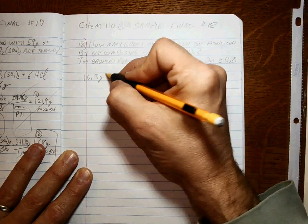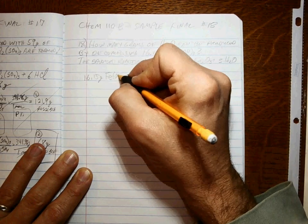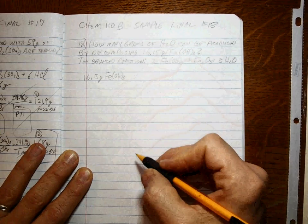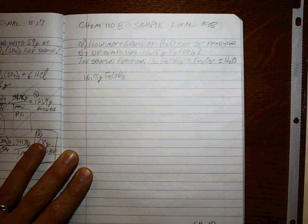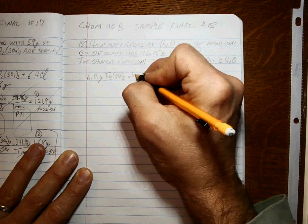That's grams of iron(III) hydroxide. You always want to convert to moles, right, so that you can do the mole-to-mole ratio. So how many moles is that?